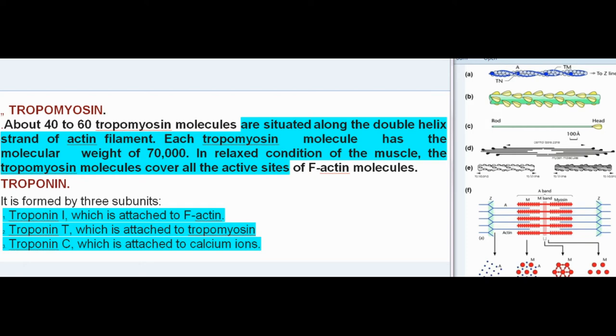Troponin: It is formed by three subunits: Troponin I, which is attached to F-actin; Troponin T, which is attached to tropomyosin; Troponin C, which is attached to calcium ions.